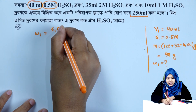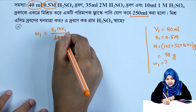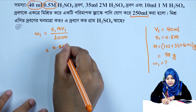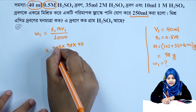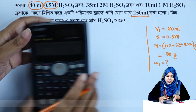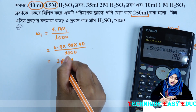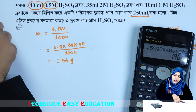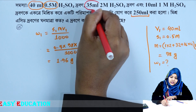Using the formula: w = S × M × V / 1000. For the first drop: S1 = 0.5 molar, M = 98 g/mol, V1 = 40 ml. So w1 = 0.5 × 1 × 98 × 40 / 1000 = 1.96 grams. So the mass of sulfuric acid in the first drop is 1.96 grams.